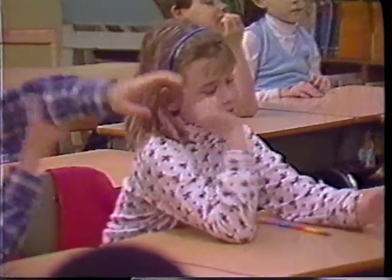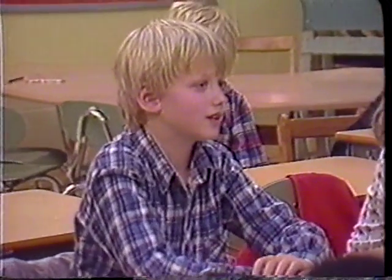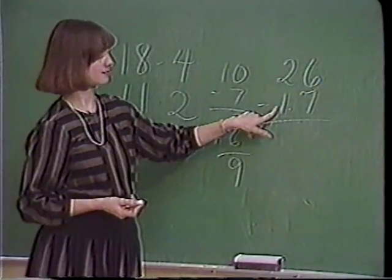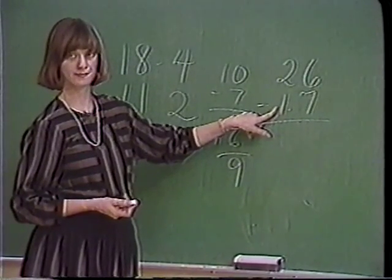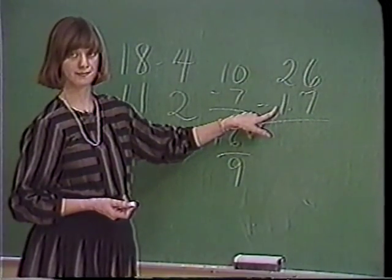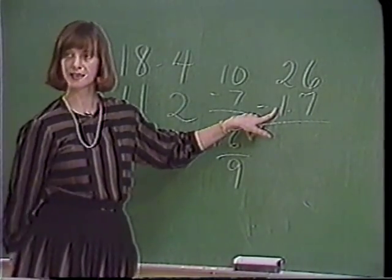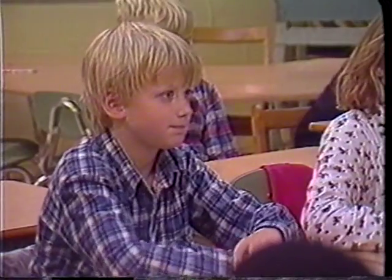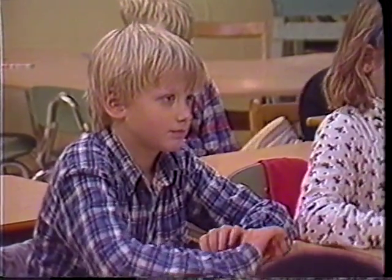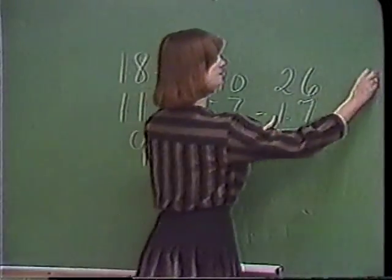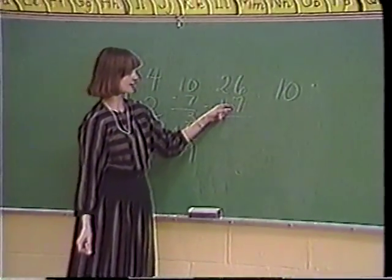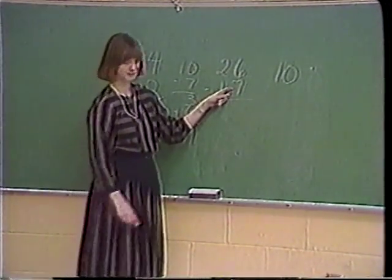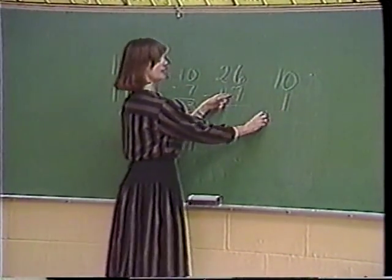I can prove it's 11. Stephen explains: 20, and 10 is 10, and 6 and 7 — 6 take away 7 is 1 — and 10 and 1 is 11. So Stephen says 20 take away 10 is 10, and he says 6 take away 7 is 1, and 10 and 1 is 11.